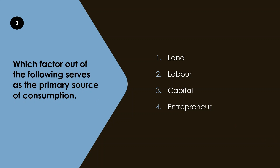Consumption refers to the use of goods and services to satisfy human wants. Among the four factors of production, labor would be the primary source of consumption, because labor includes all workers and individuals. They earn wages which they use to purchase goods and services, and households, which are primarily composed of labor, are the main consumers in an economy. Other factors contribute to production but are not the primary agents of consumption. Labor is the correct answer.